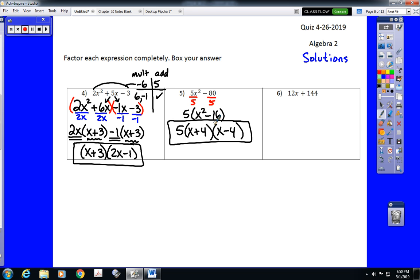And finally, on number six, we have a GCF of 12. So, we factor that out first, leaving x plus 12. This binomial does not factor again, making it our solution.